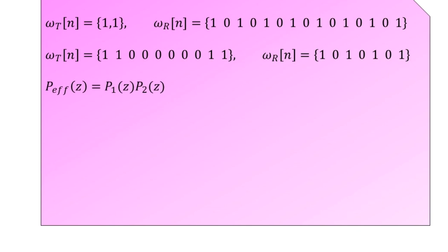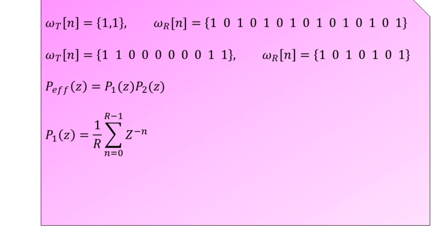For Design 3 with 8 total elements, the transmit aperture function is W_t(n) = {1, 1, 0, 0, 0, 0, 0, 0, 1, 1} and the receive aperture function is W_r(n) = {1, 0, 1, 0, 1, 0, 1}.